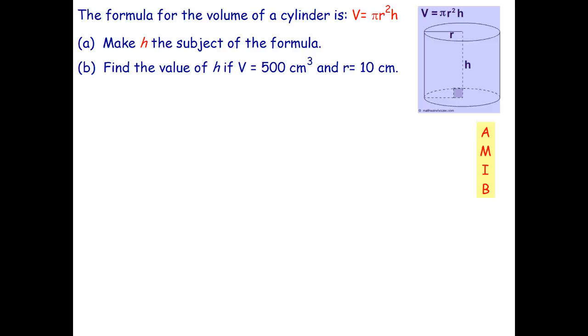Hello students. In the last video we showed you how to change the subject of the formula for the area of an ellipse. So in this video you've got two questions to do, both concerning the volume formula for the volume of a cylinder, which is V = πr²h.